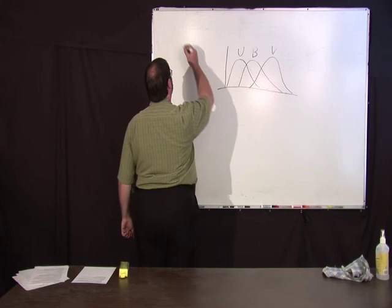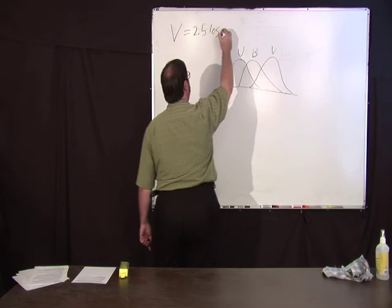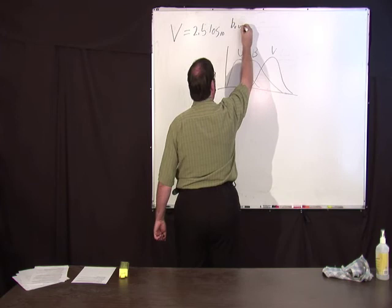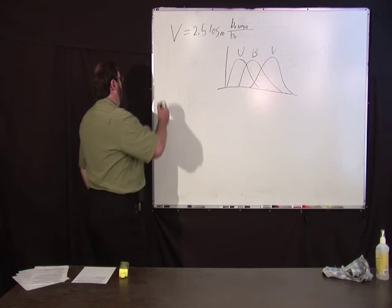So you could come up with a visible magnitude, right? which is 2.5 log 10. This is basically what we showed before, of the brightness in the visible of Vega, divided by the brightness in the visible of the star you're looking at, over this filter. Similarly, you can define one for ultraviolet and blue. Those are just three different magnitude numbers.